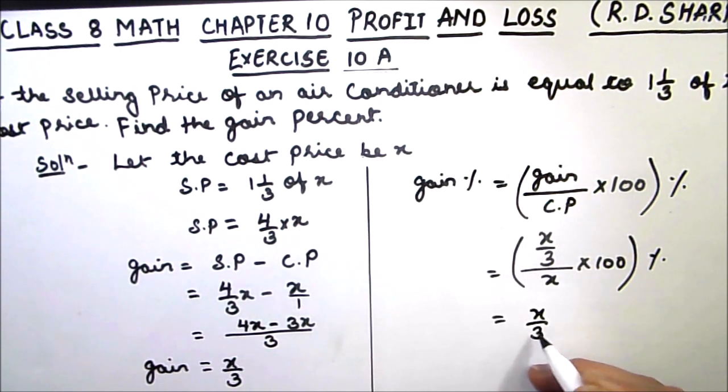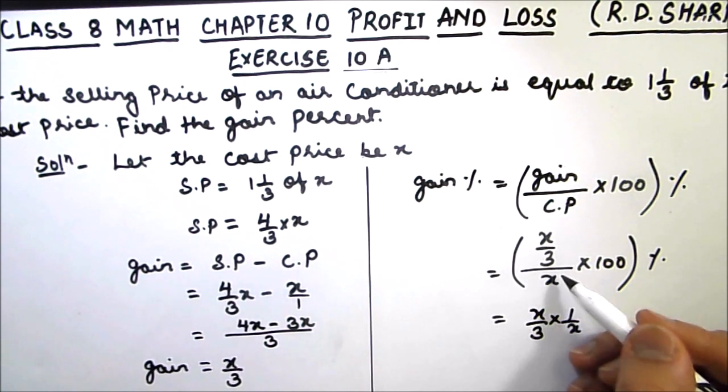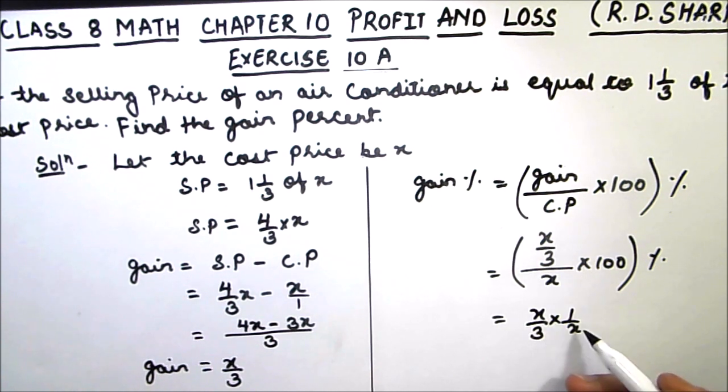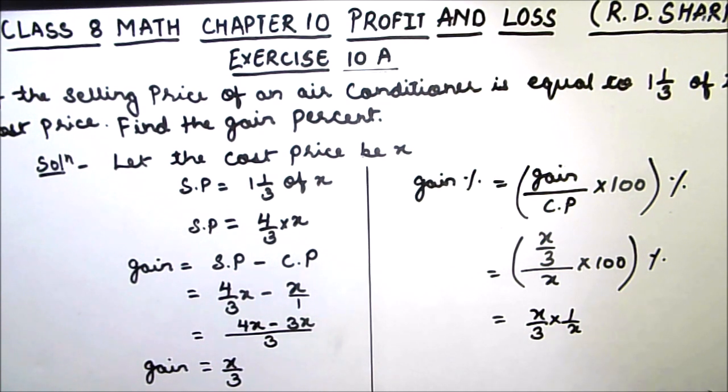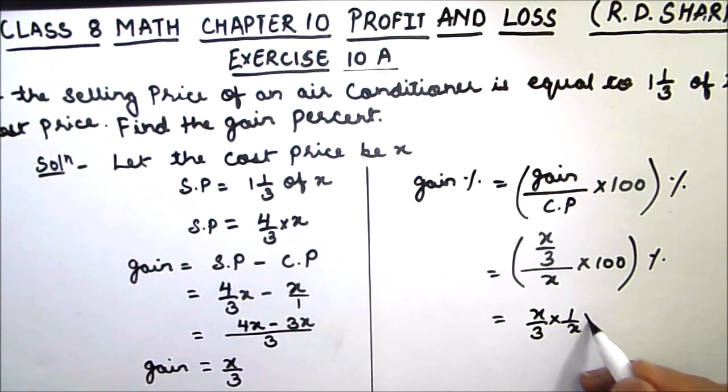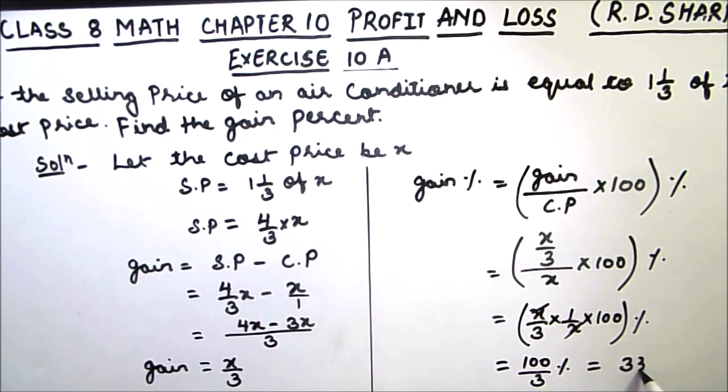Solving this, this will be x/3 times 1/x. Here there is fraction division, so we will multiply and inverse the denominator. So this will be 1/x times 100 whole percentage. So this x and x gets cancelled. This will be 100/3 percent, which is equal to 33.33 percentage.